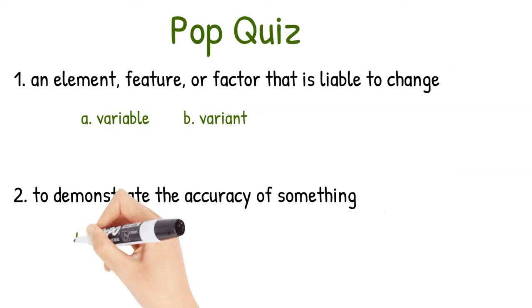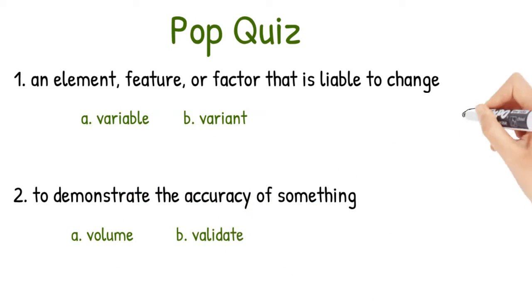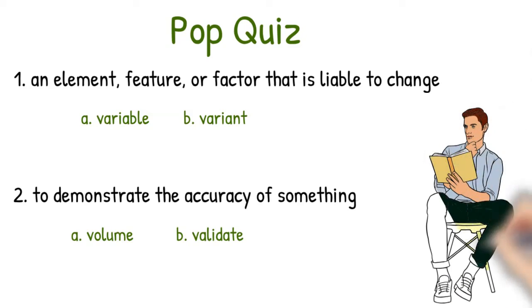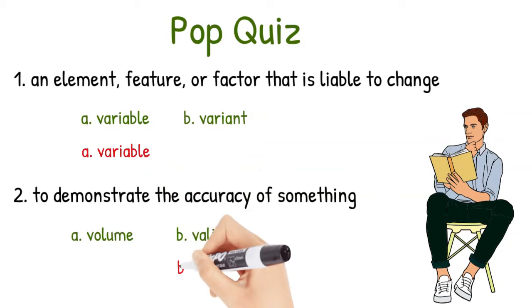Number two, to demonstrate the accuracy of something. So you have a choice of A, volume or B, validate. And the answers are A, variable and B, validate.